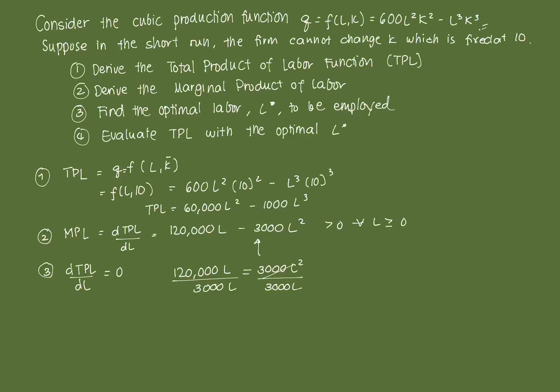Simplifying, this cancels out. We're just left with L on this side. And then the Ls cancel out here. 120,000 divided by 3,000, that's 40. And 40 is our optimal amount of labor to be utilized.